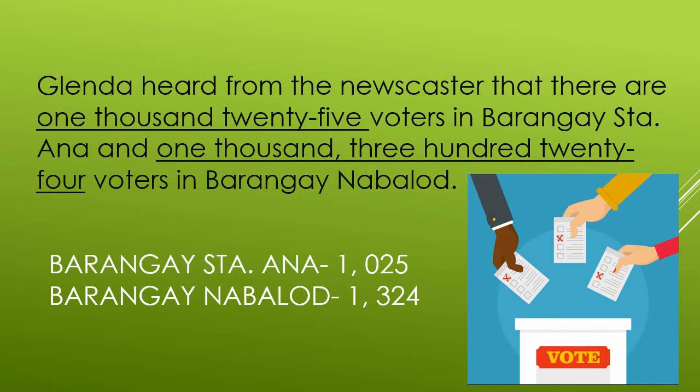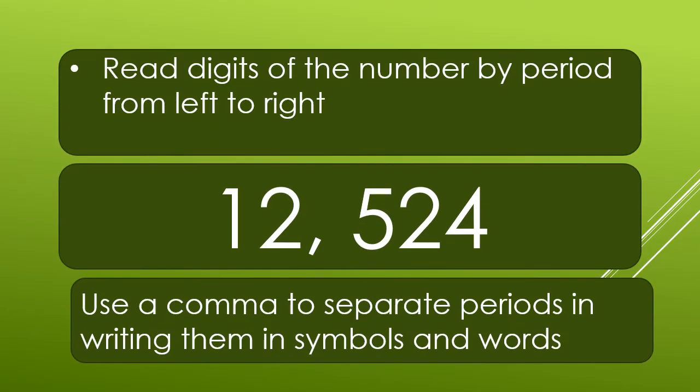If we look at our story problem, there are two ways of writing a number. The first one is in words. The other one is in symbols. To read and write numbers, we read the digits from left to right. We start from the thousands period — we have 12 thousands. Then we move to the unit period: 524. So we have 12,524. We also use a comma to separate periods in writing them in symbols and in words.